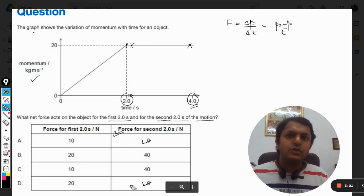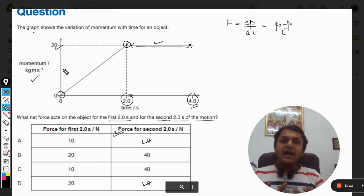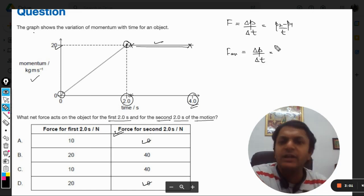Here the momentum is same at 20. But for the first part, we can say this is the initial momentum and this is the final momentum, and there is a certain change in momentum. So for the first part, we can find the average force by having change in momentum divided by change in time.